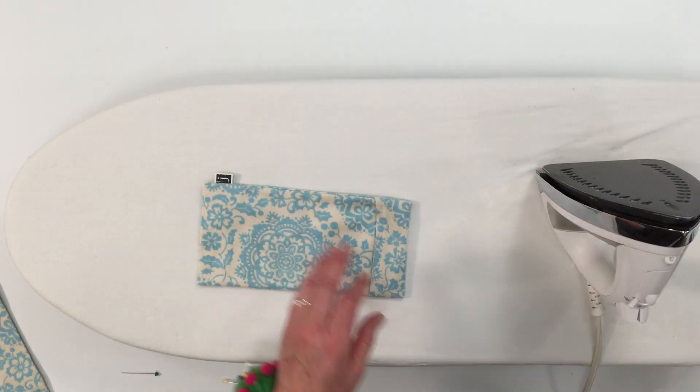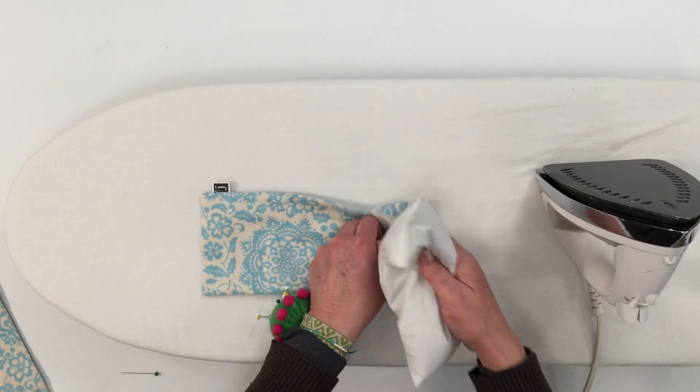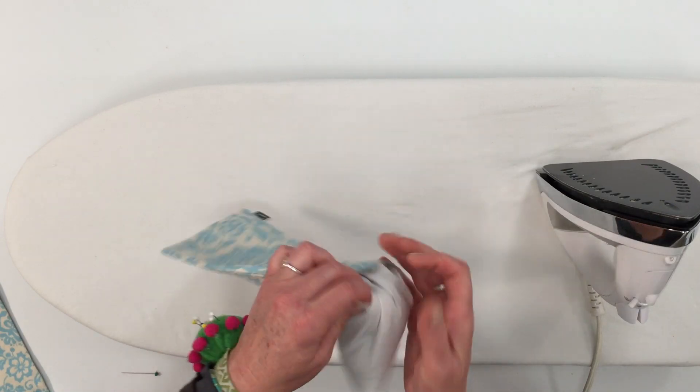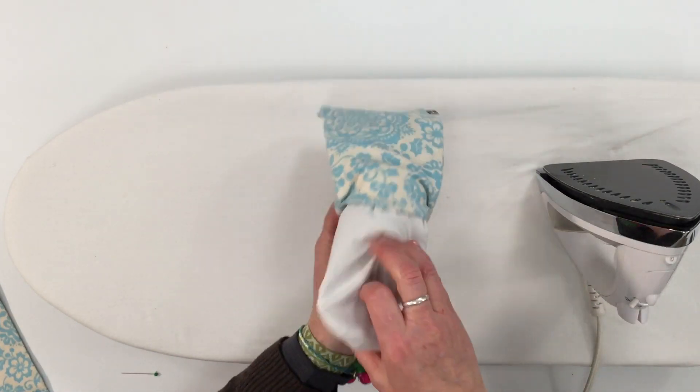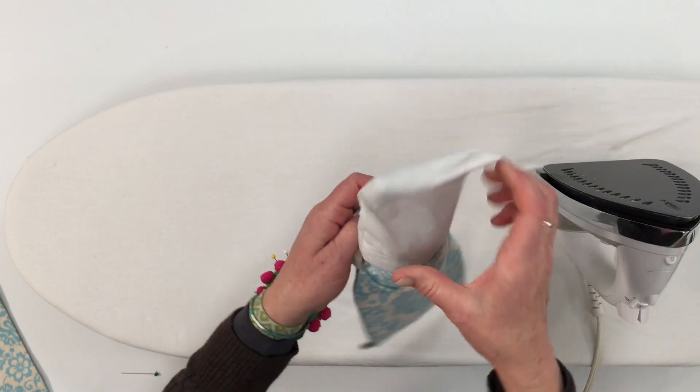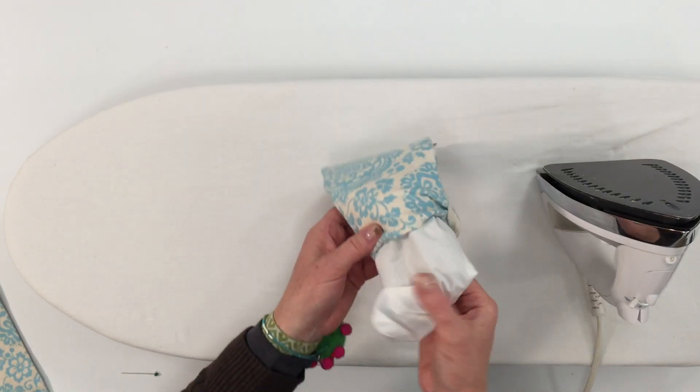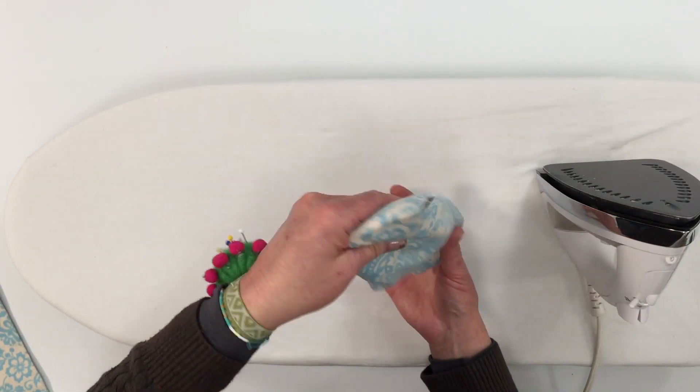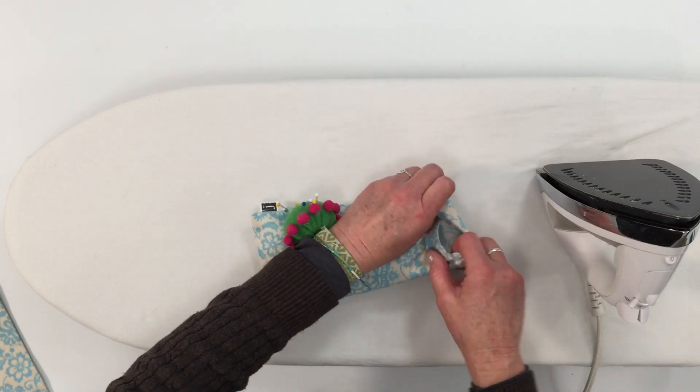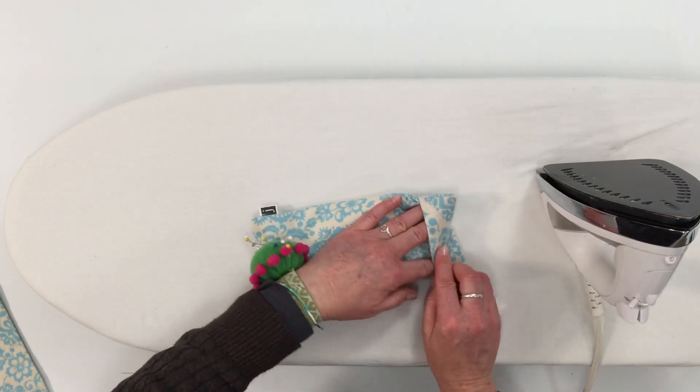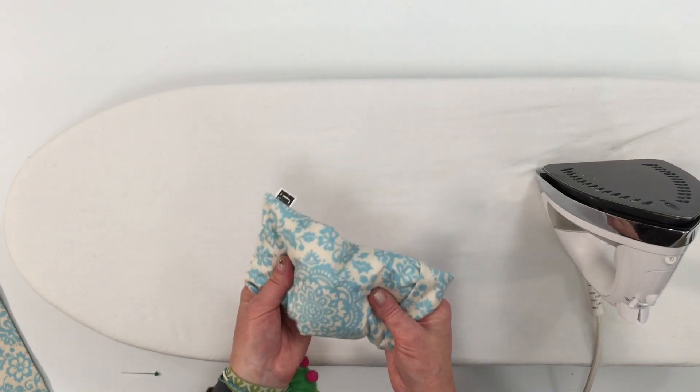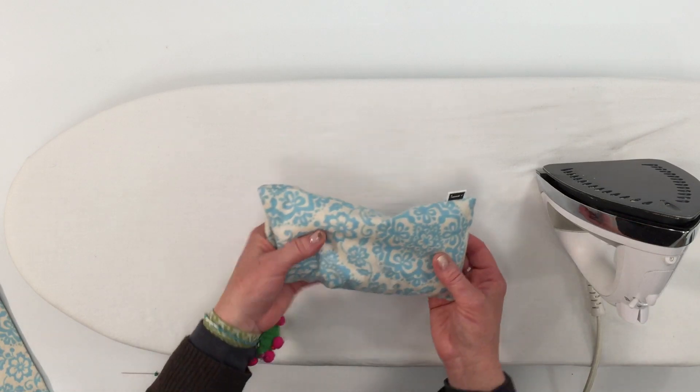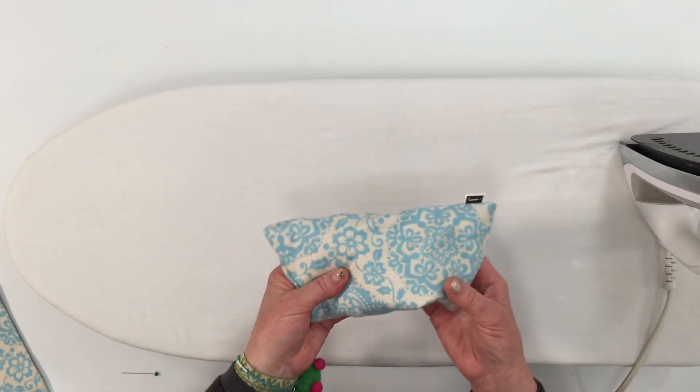Now we can put the bag in. I like to let my rice or the flax seeds drop down to the bottom of the bag; that makes it a little easier to put in. Even that out, pull your flap over.